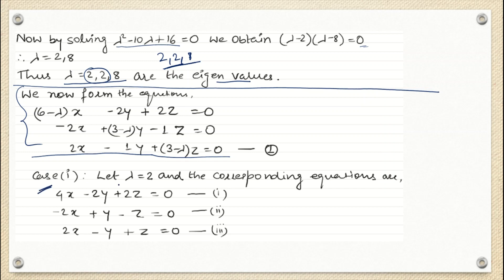Now we find eigenvectors corresponding to the eigenvalues. Case one: substituting lambda equals 2 into these equations gives 4x minus 2y plus 2z equals 0 for the first equation; -2x plus y minus z equals 0 for the second; and 2x minus y plus z equals 0 for the third. This is the key point: whenever the characteristic equation has equal roots, you are going to get the same equation repeated.